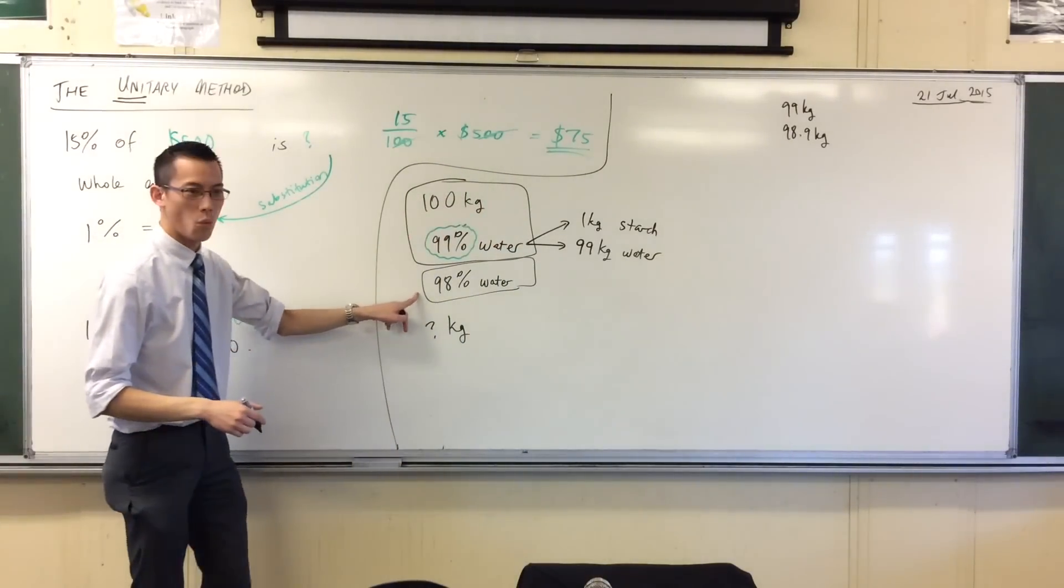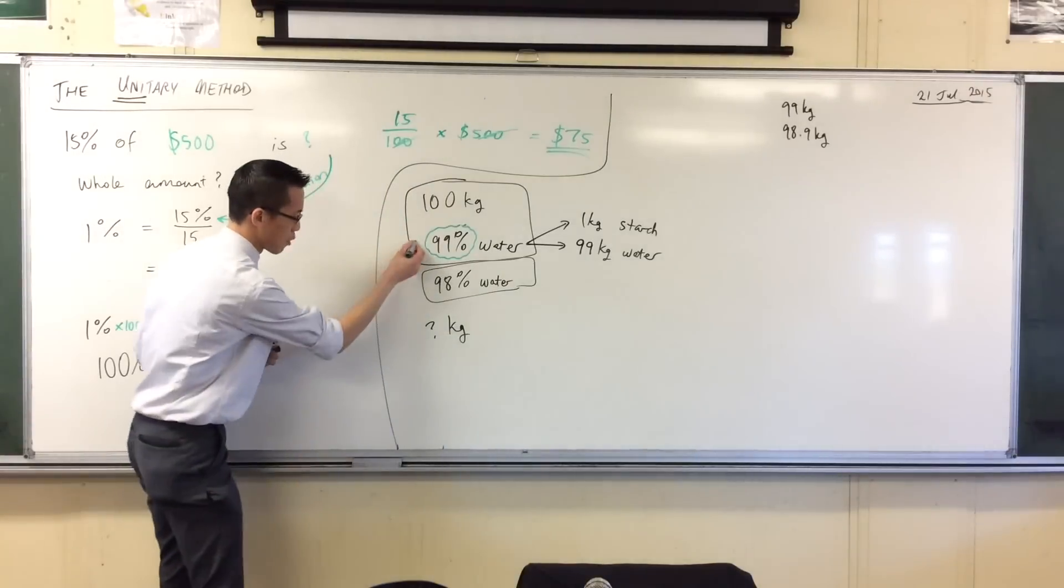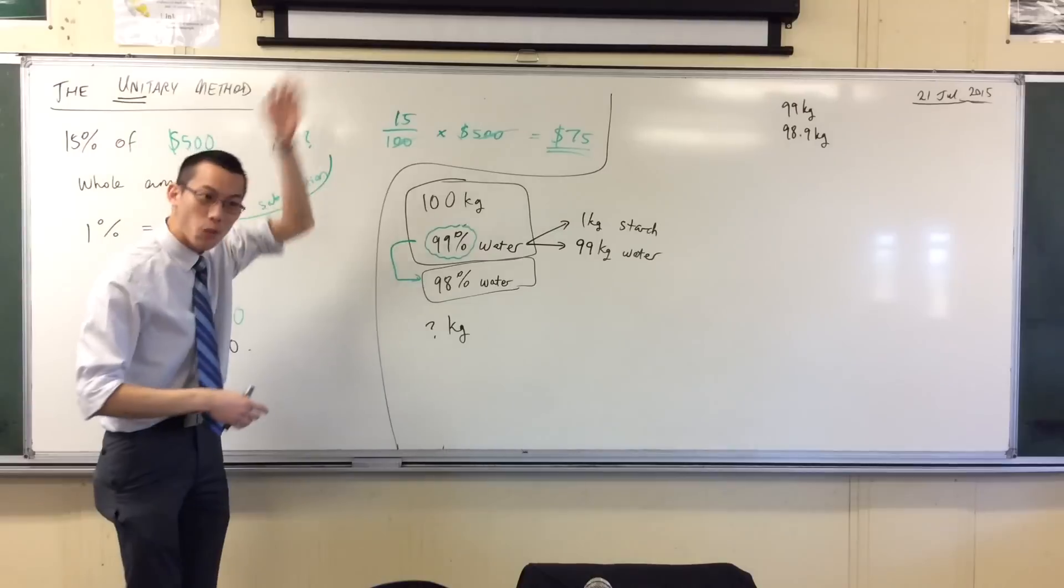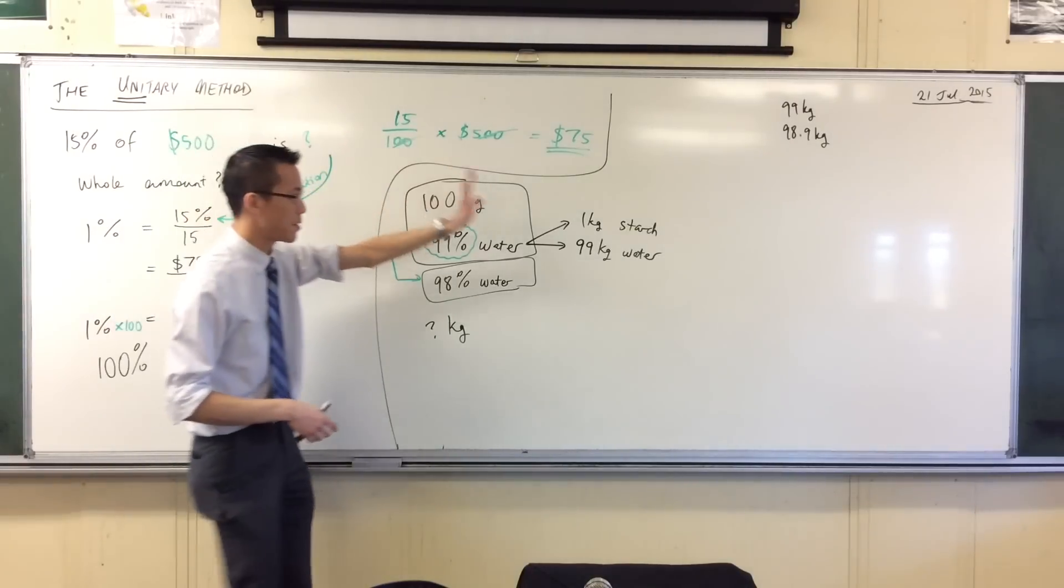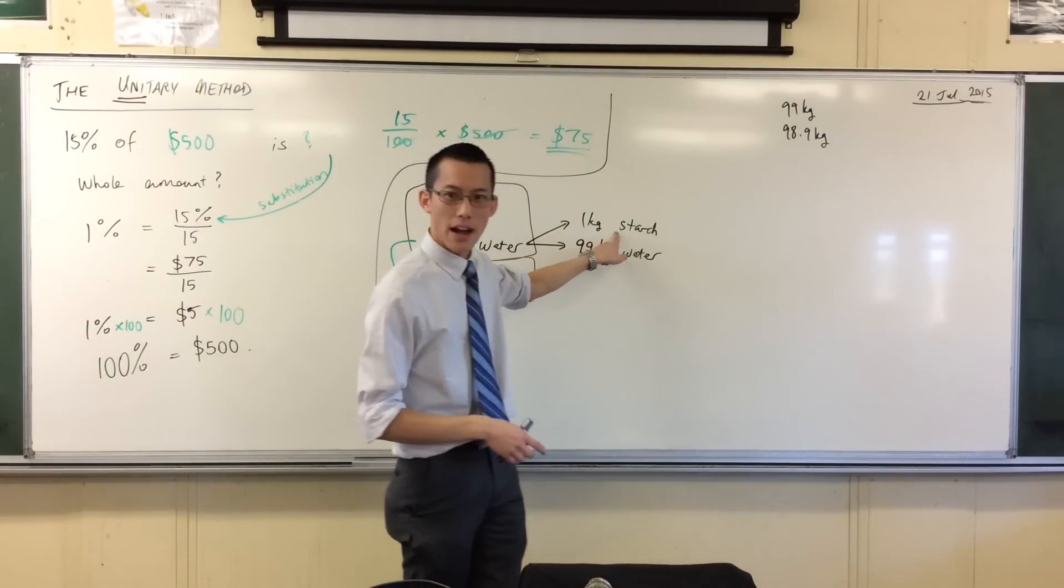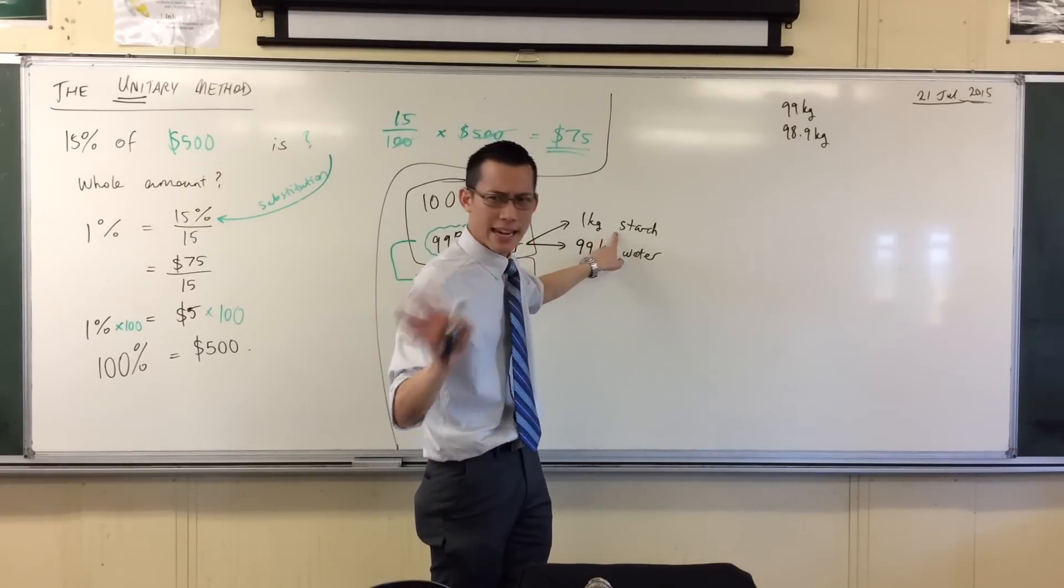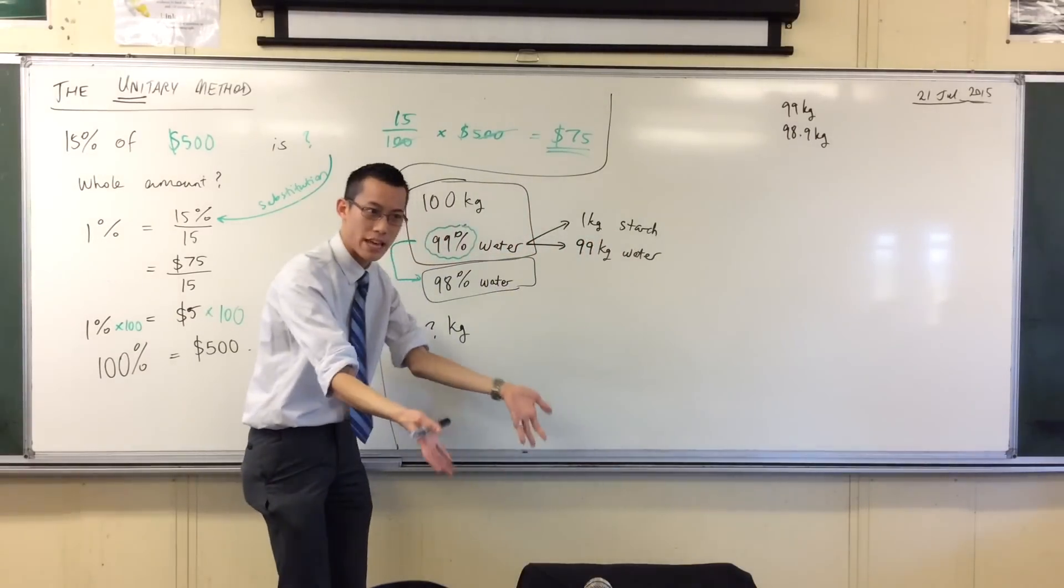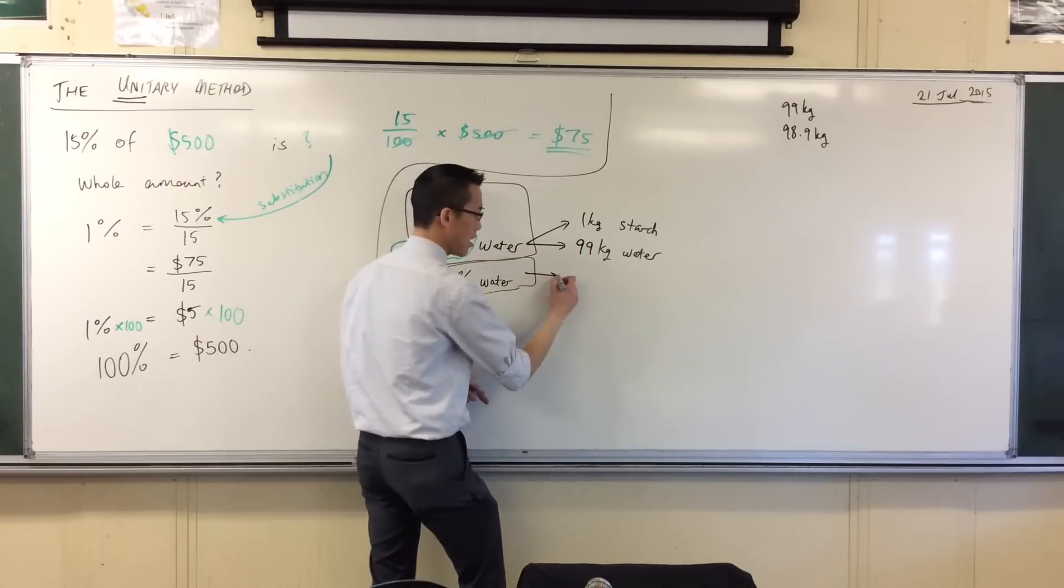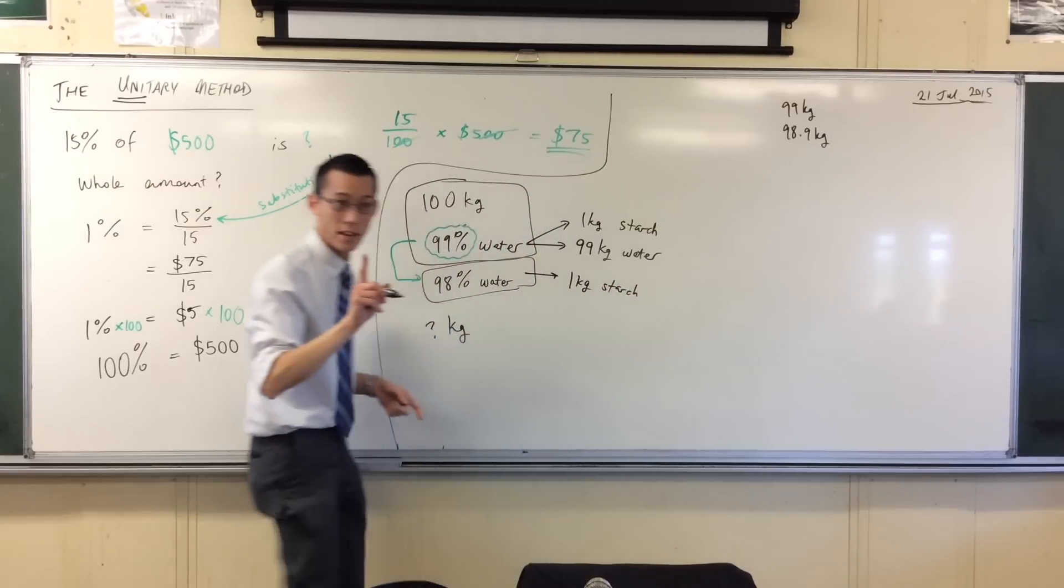All right, now what happens when things change, okay? When I left them for a week and they probably kind of turned green and stuff like that and grew shoots, water went away, right? Water went away. So there's going to be less water. How much starch went away? Like they're just sitting there. No starch went anywhere, right? All the starch is still there. So how much starch will there be? It will be one kilo of starch. Still, right? Still.